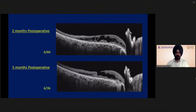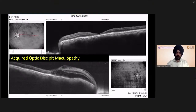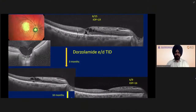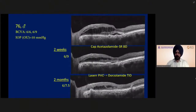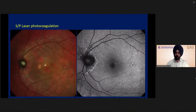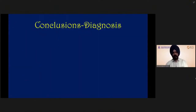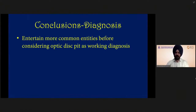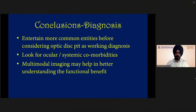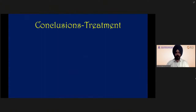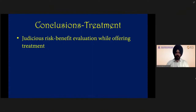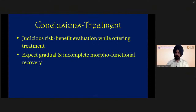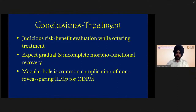There is another entity called acquired optic disc maculopathy. This is a patient with glaucoma who did well just with topical drops — laser photocoagulation was done and then the patient was switched to topical dorzolamide. In conclusion: an alternative diagnosis should always be entertained before considering pit as a working diagnosis. Look for ocular and systemic comorbidities. Multimodal imaging may help in better understanding the functional benefit of a proposed treatment. The risk and benefit should be judiciously evaluated. Expect very gradual and incomplete structural and functional recovery. With conventional non-fovea-sparing ILM peeling, macular hole is a very common complication.